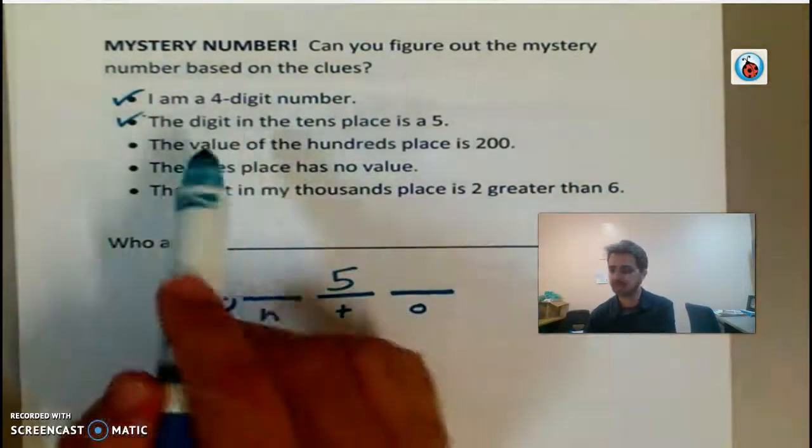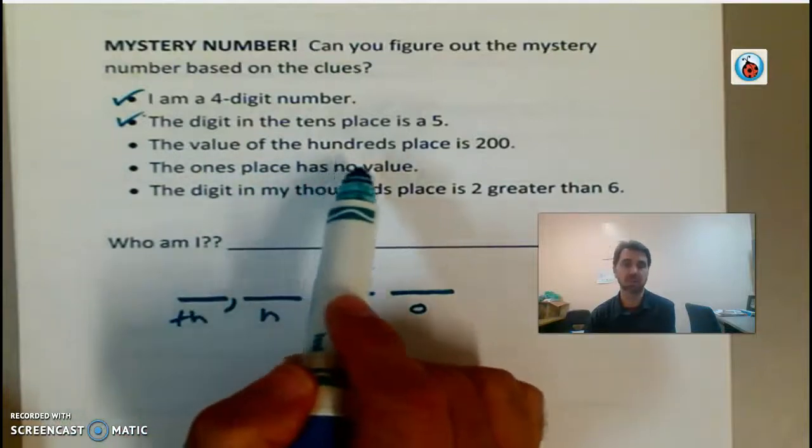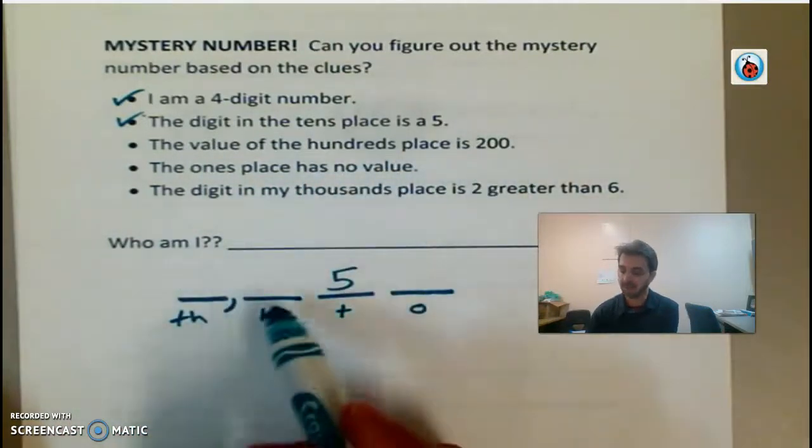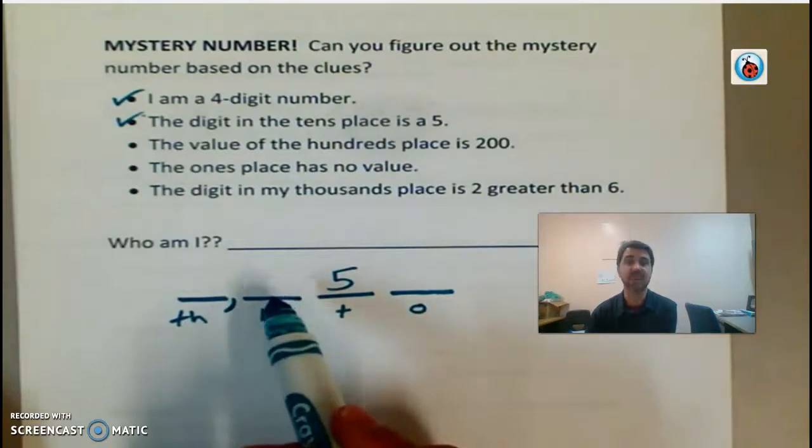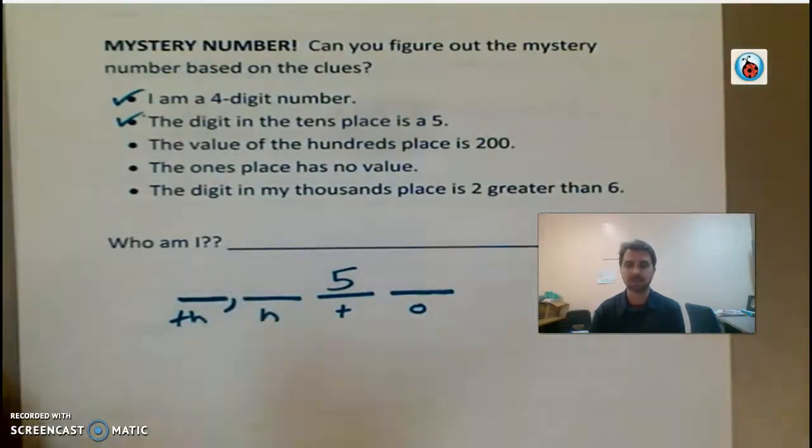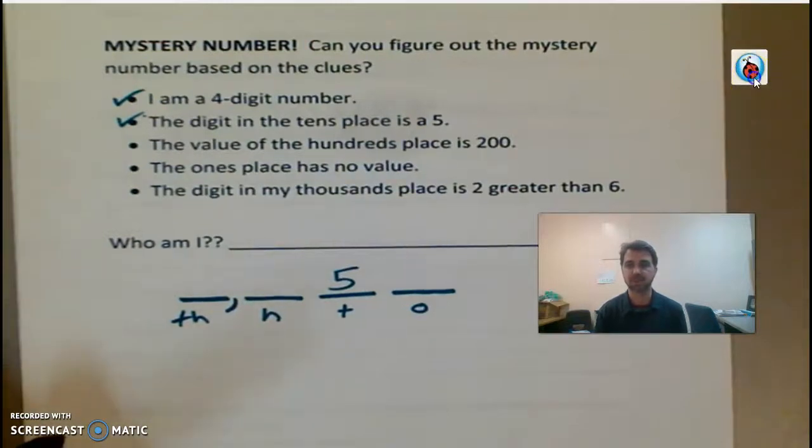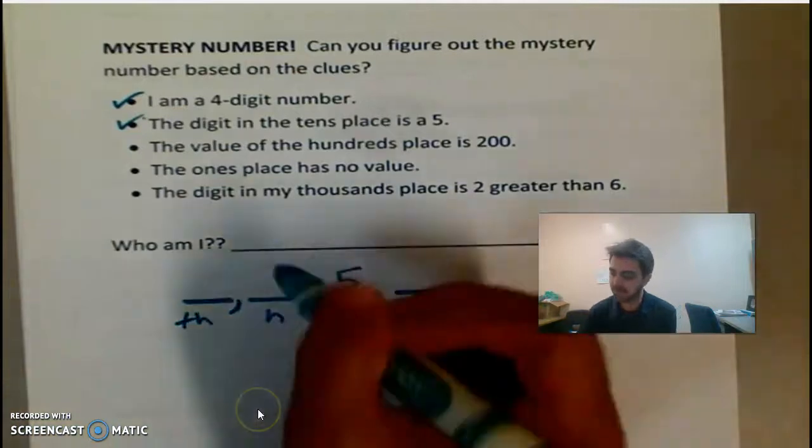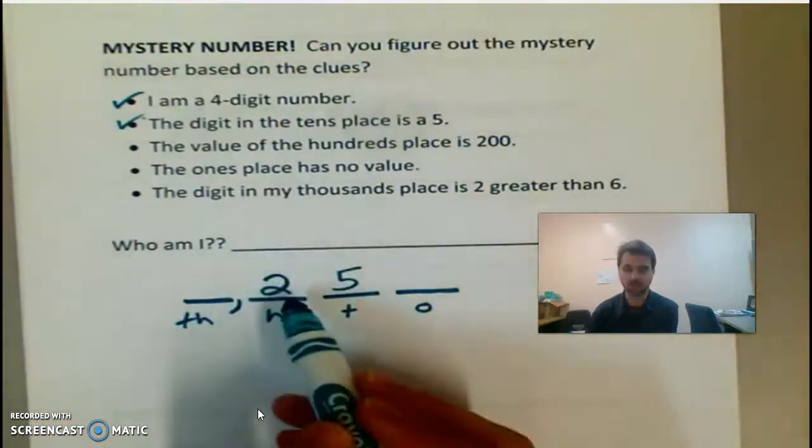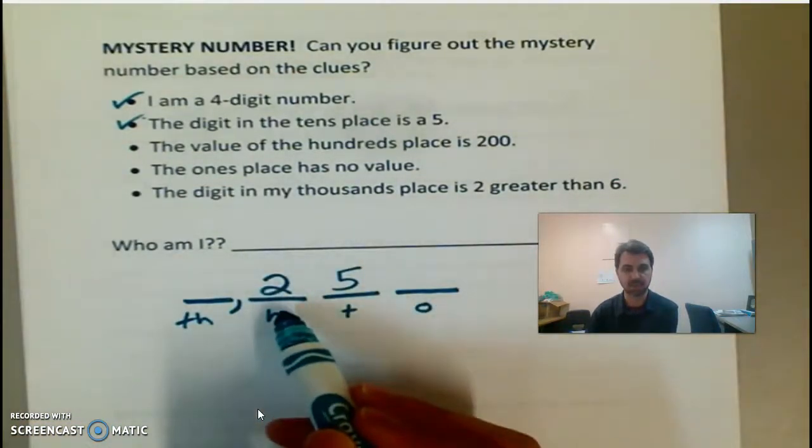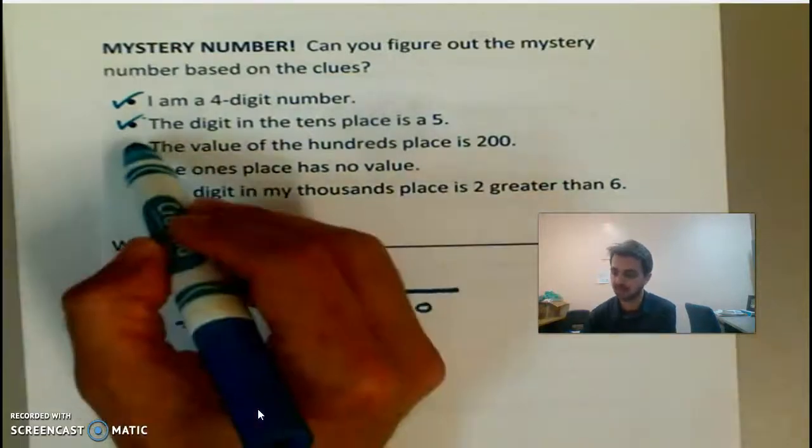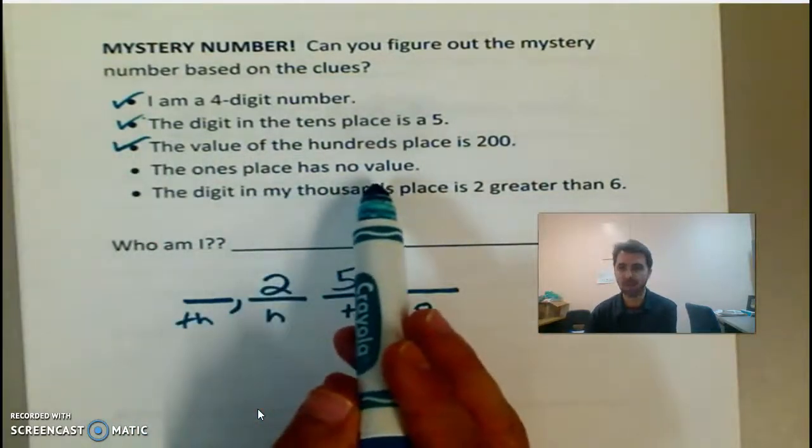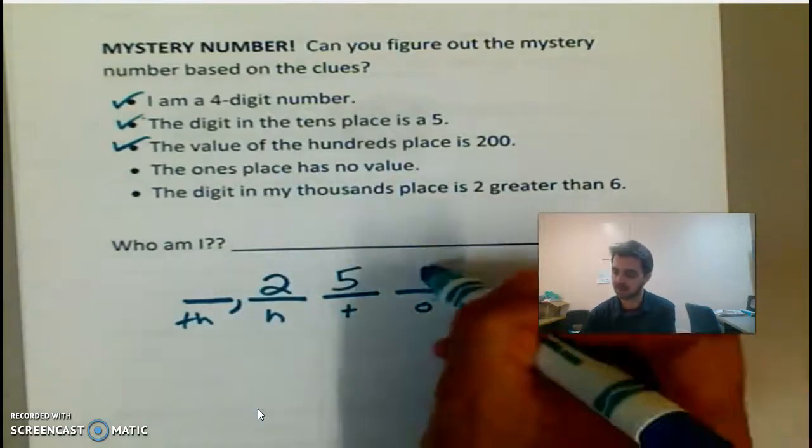The next clue says the value of the hundreds place is 200. Now I'm not going to write 200 there. It just means the value is 200. So what digit, right, what digit should I write there? I should write a two because the value of that two, since it's in the hundreds place, is 200. Okay, so I did that one. The ones place has no value, it says. So that would be zero.